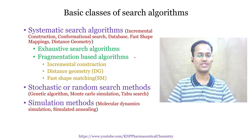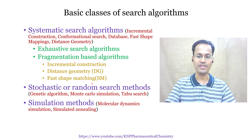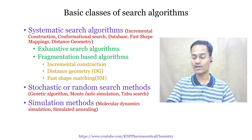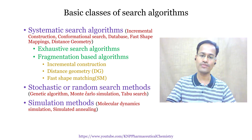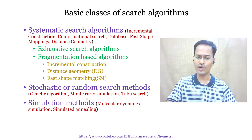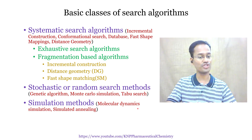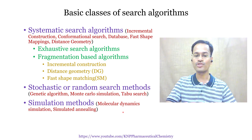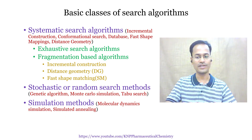Stochastic or random search methods, as the name indicates, randomly generate various conformations. Examples of random search methods include genetic algorithm, Monte Carlo search algorithm, and taboo search algorithm. The third class is simulation methods, with examples including molecular dynamics and simulated annealing.